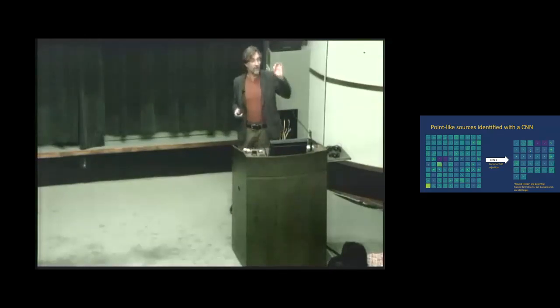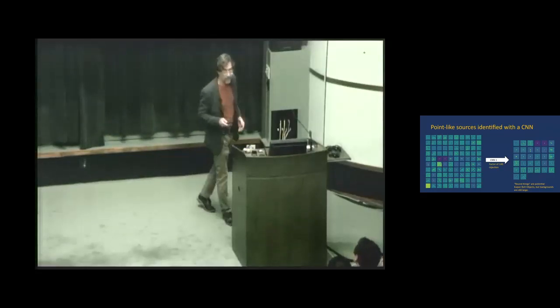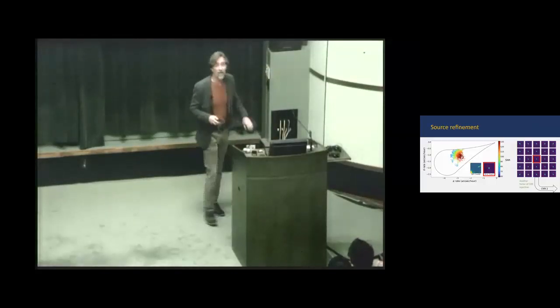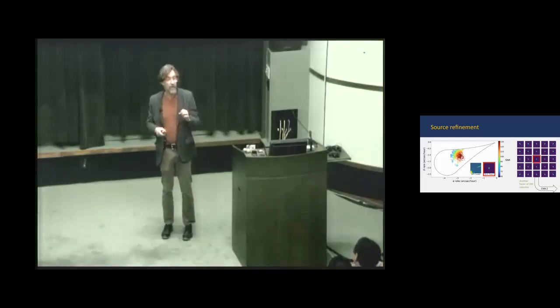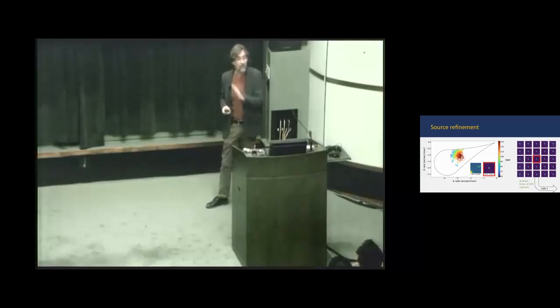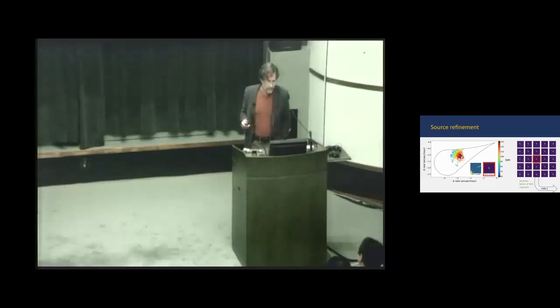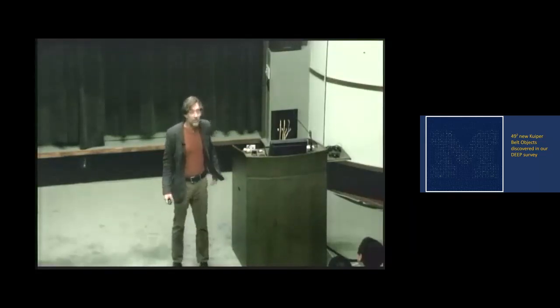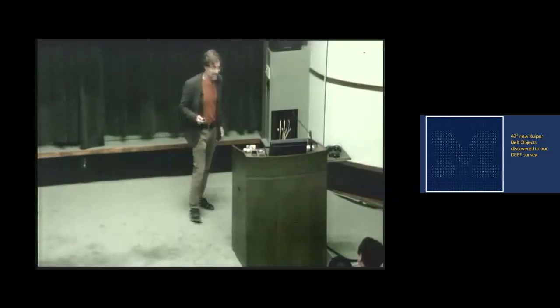Every little defect in each image is multiplied by 100 times for each stack. So the first neural net, Kevin Jr., looks for round things. Round sources consistent with looking like a star are candidate Kuiper Belt objects. The rejection factor here is 100, but that's still too much background. We also look at how the shape deviates from round when we don't quite match the moving rate correctly. It deviates in this characteristic radial pattern that's not what background sources would do. When we put all these together, so far in our data we've discovered over 2,000 candidate Kuiper Belt objects.